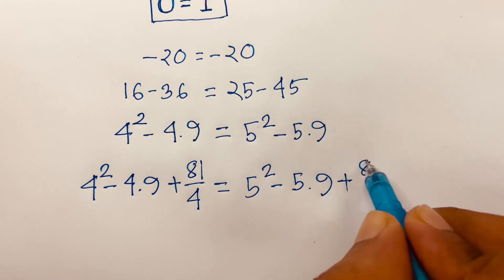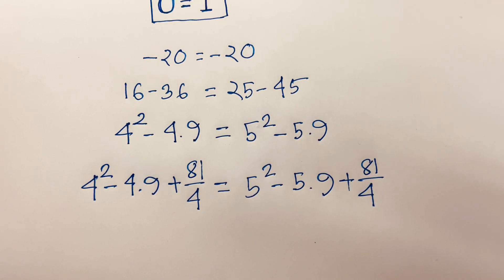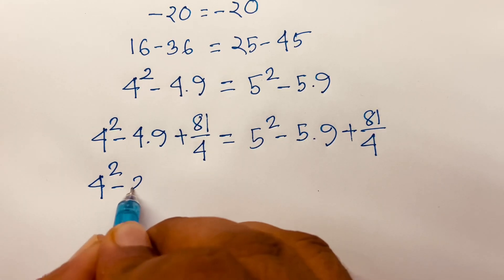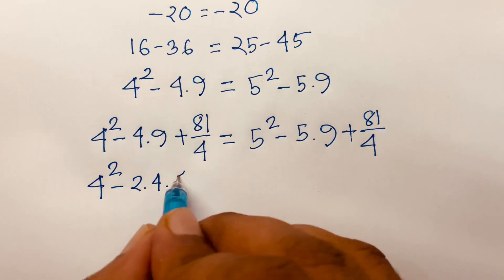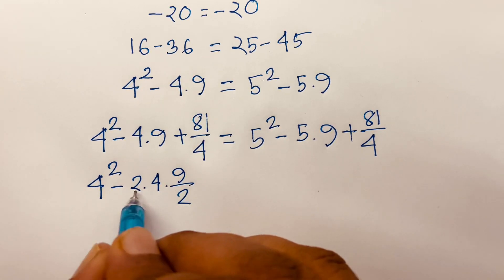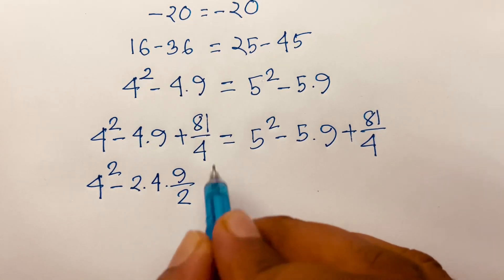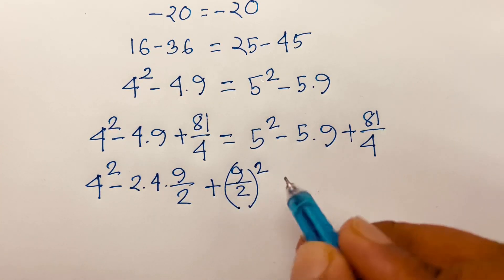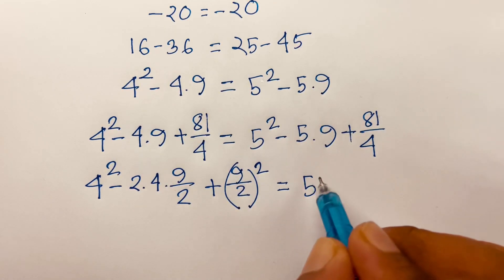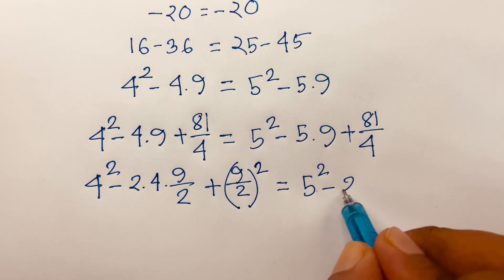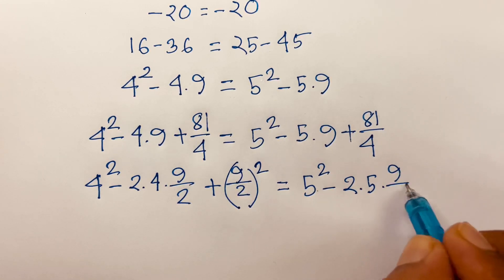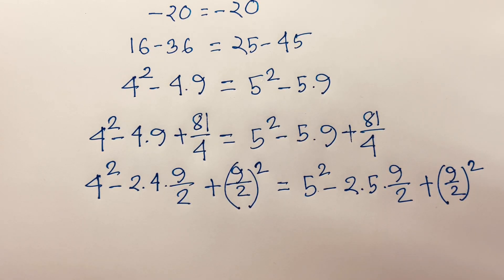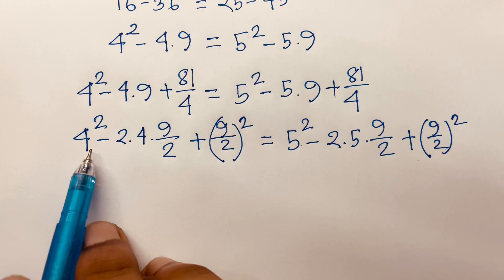I add 81/4 to both sides. On the left side: 4² minus 2 times 4 times 9/2 plus (9/2)². On the right side: 5² minus 2 times 5 times 9/2 plus (9/2)².